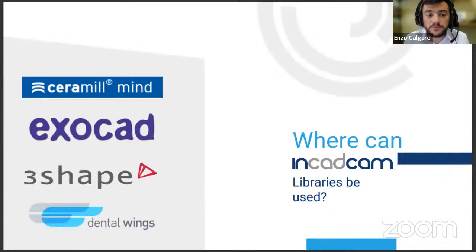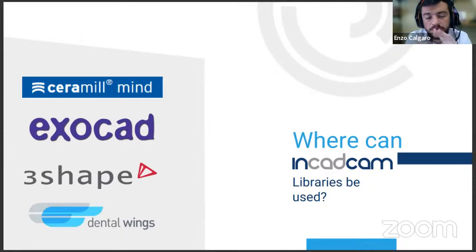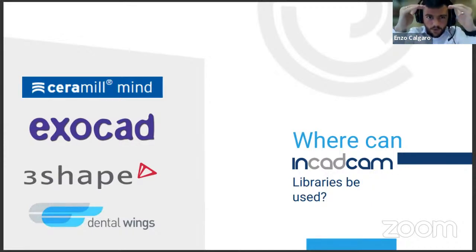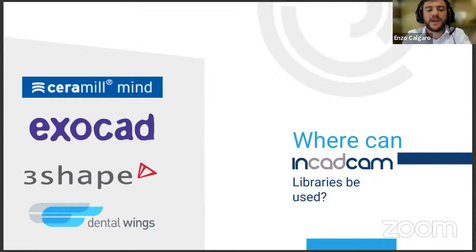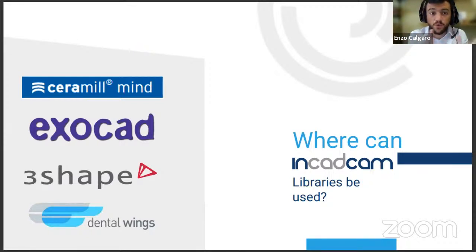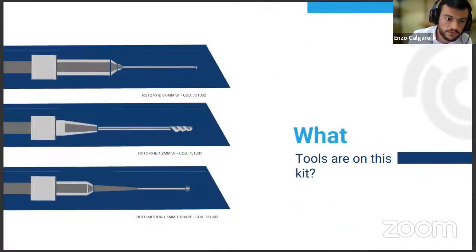Where can our libraries be used? They can be used on Ceramil Mind, ExoCAD, ThreeShape, and Dental Wings. This is the order in which they function best — you'll have more options on Mind, then ExoCAD, then ThreeShape, then Dental Wings.